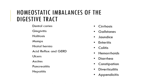Diverticulitis is another "-itis" condition — an inflammation on the wall of the large intestine, sometimes referred to as an inflamed herniation in the wall of the large intestine. Finally, we have appendicitis, which is the inflammation of the appendix.